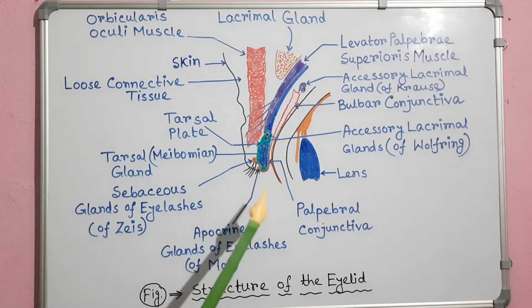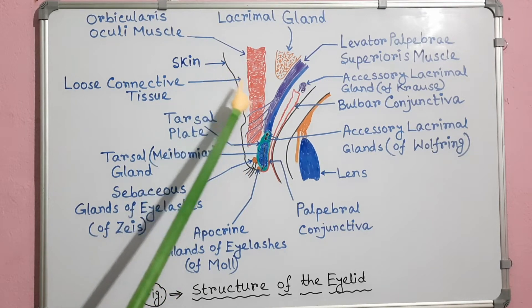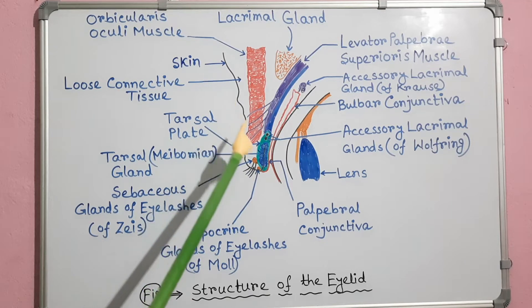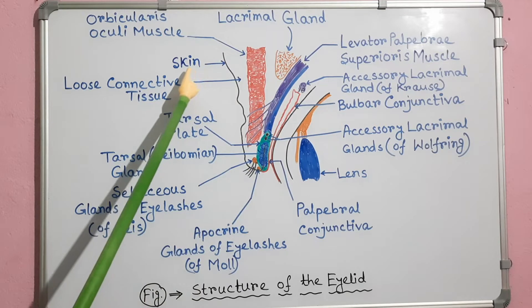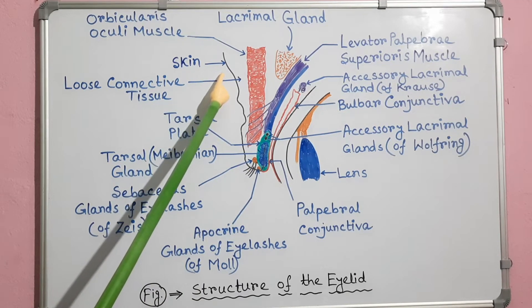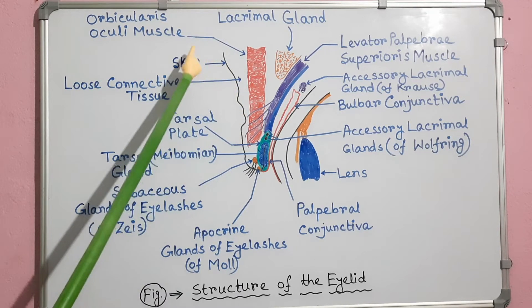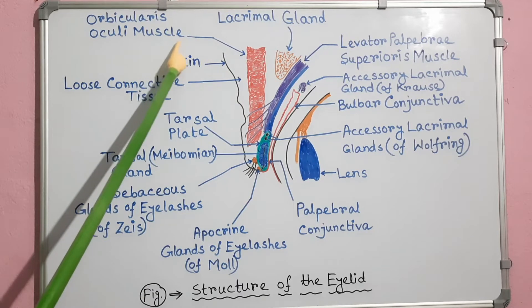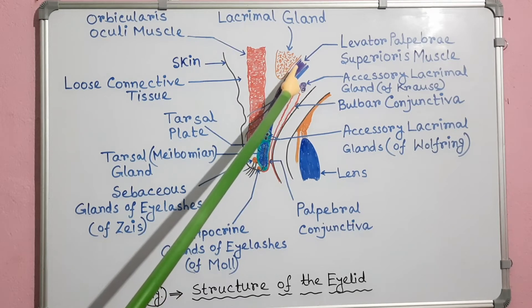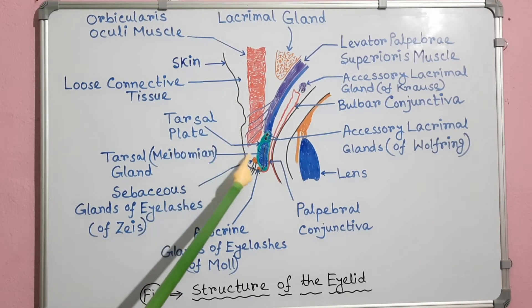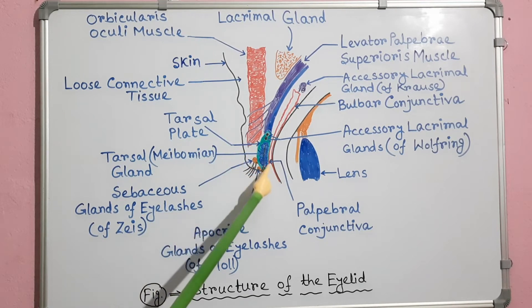If we see the structural details of the eyelids, we will see that the eyelids consist of five layers of tissue. From the outer to the inner surface, they are: a thin layer of skin on the external surface, a thin layer of loose connective tissue, a layer of skeletal muscle consisting of the orbicularis oculi and levator palpebrae superioris muscles, a crescent-shaped layer of dense connective tissue called the tarsal plate, and the conjunctiva.